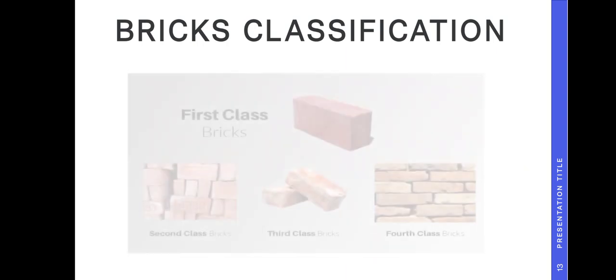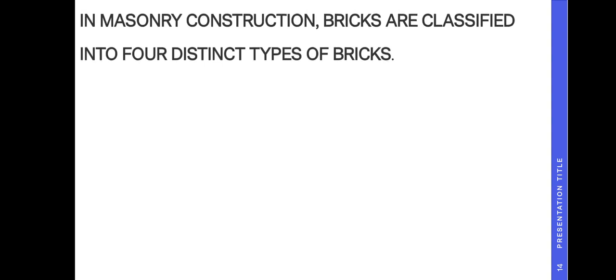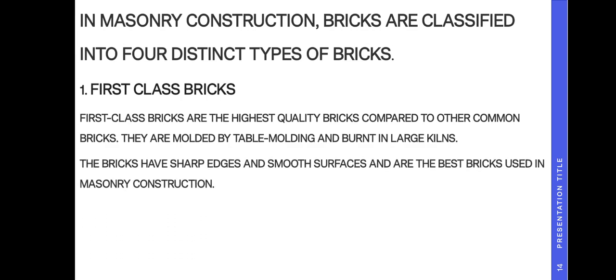Bricks classifications: first class bricks, second class bricks, third class bricks, and fourth class bricks. In masonry construction, bricks are classified into four distinct types. First class bricks are the highest quality bricks compared to other common bricks. They are molded by table molding and burnt in large kilns. These bricks have sharp edges and smooth surfaces and are the best bricks used in masonry construction.